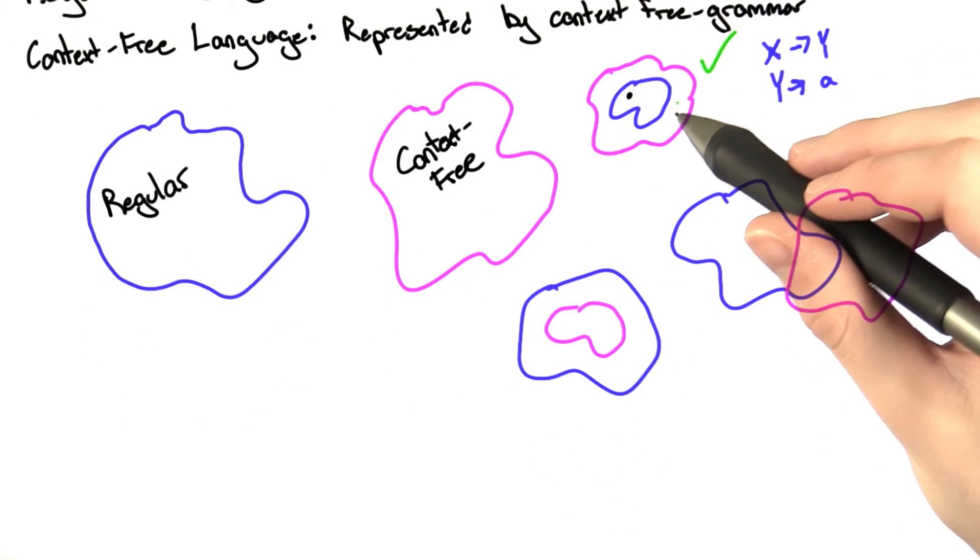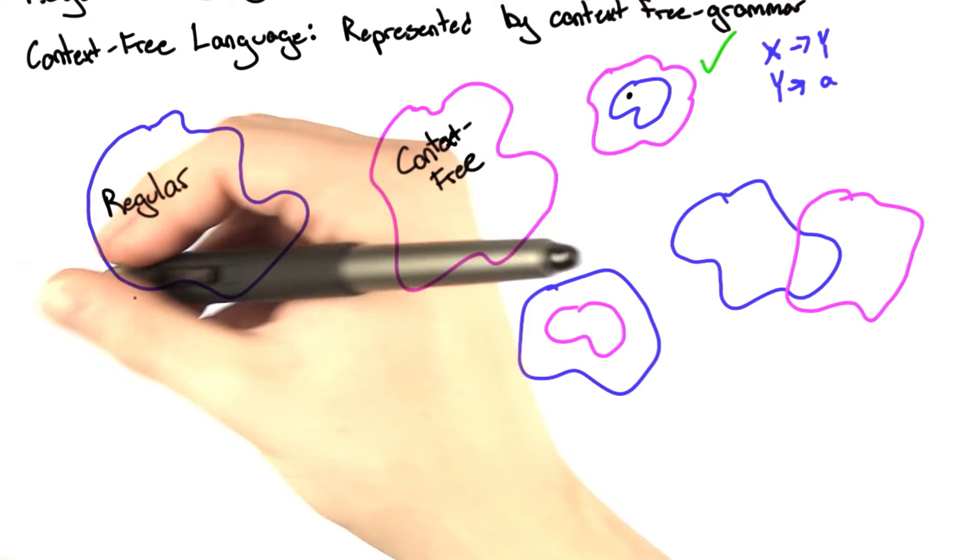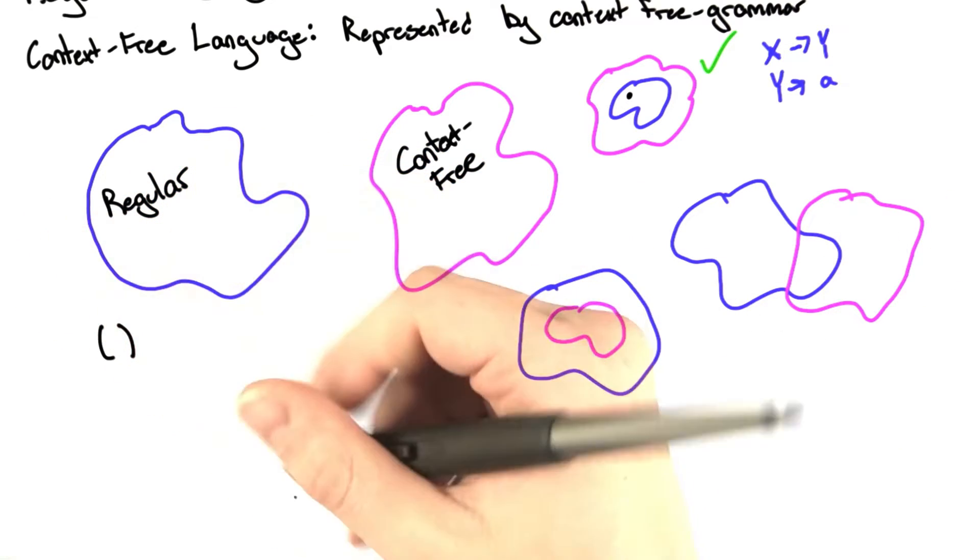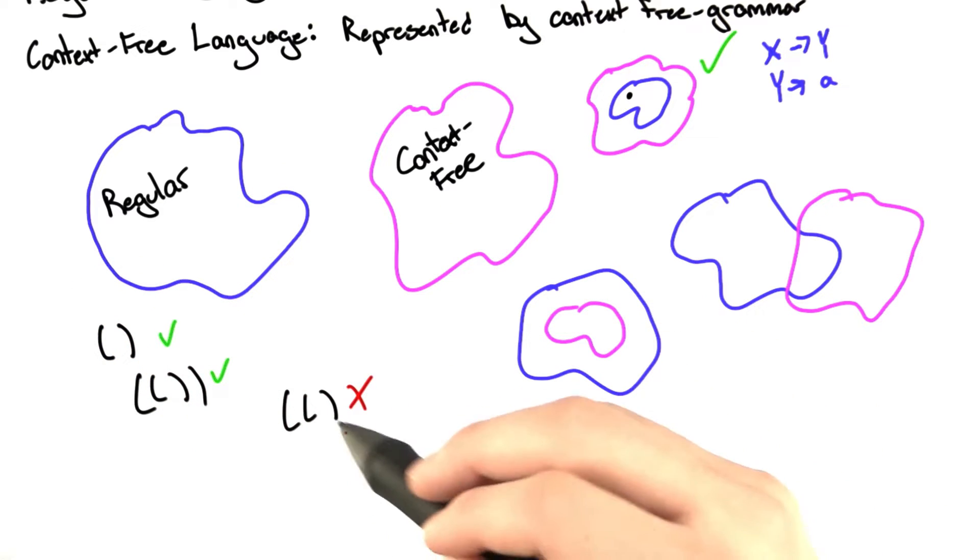And to show that there are some context-free languages that are not regular, we just have to come up with an example. An example of this is the set of matching parentheses. As it turns out, you can't represent this language with a regular expression.